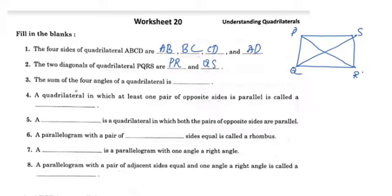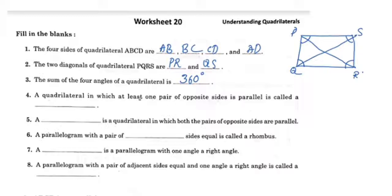The sum of the four angles of a quadrilateral is 360°. The four angles of ABCD sum to 360°. A quadrilateral in which at least one pair of opposite sides is parallel is called a trapezoid.